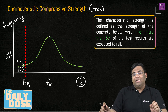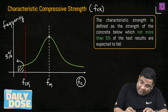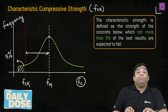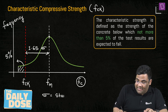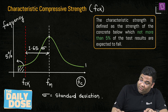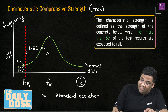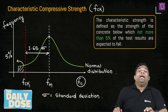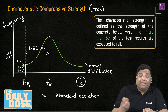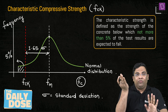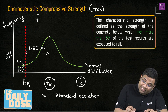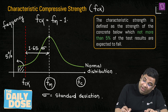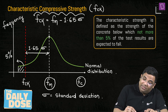You can see from the curve that only 5% of samples fall below FCK. Numerically, the difference between FCK and FM is 1.65 times Sigma, where Sigma is the standard deviation. This is a property of the normal distribution curve: to find the strength below which only 5% of samples fall, you subtract 1.65 times Sigma from the mean. So FCK = FM − 1.65σ.